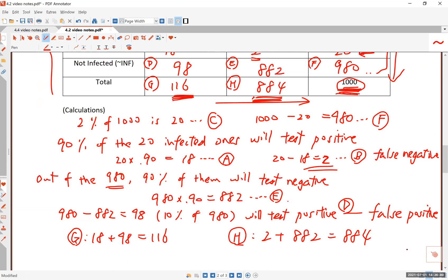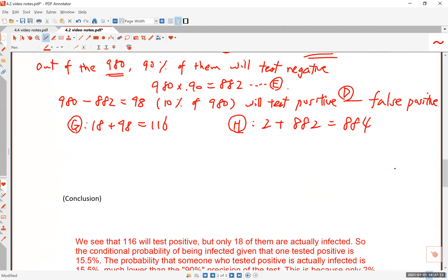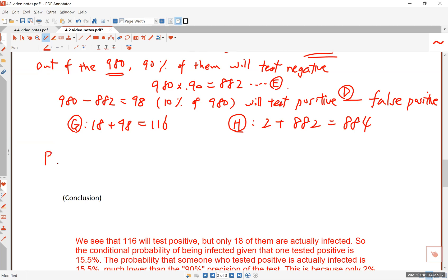Now let's answer the final question: how likely is it, what is the probability that you are actually infected given that you test positive? Testing positive sounds like you are automatically infected, but with a test as good as 90% accurate, take a look at this: out of 116 people who test positive, only 18 of them are really infected. The probability that you are indeed infected given that you test positive is 18 divided by 116.